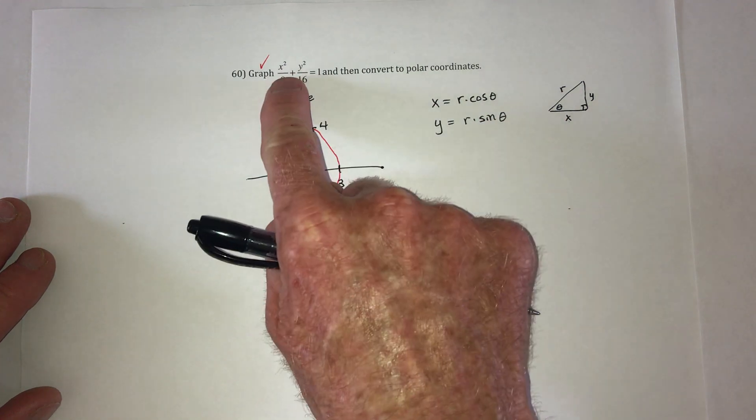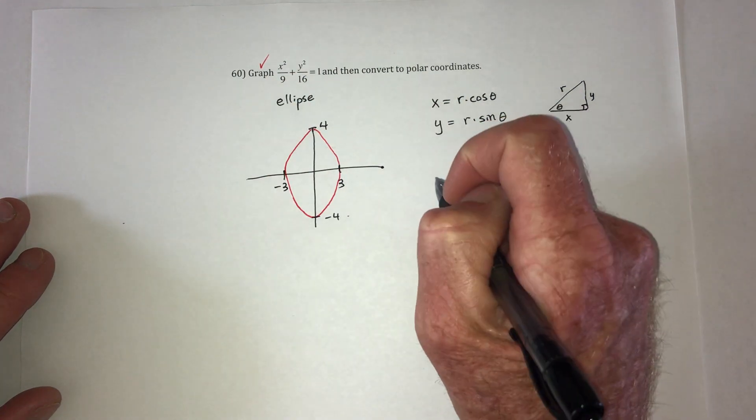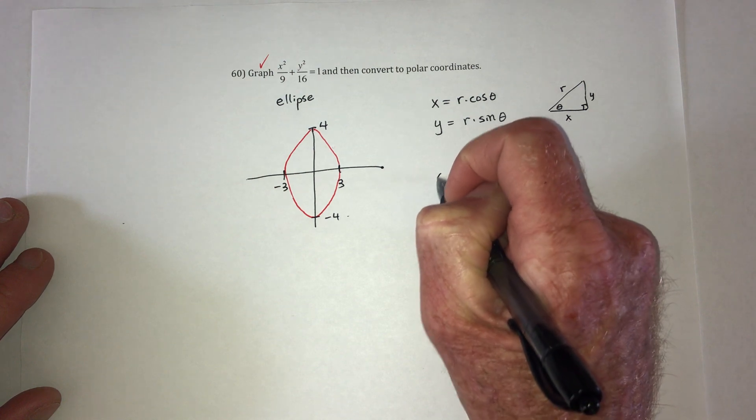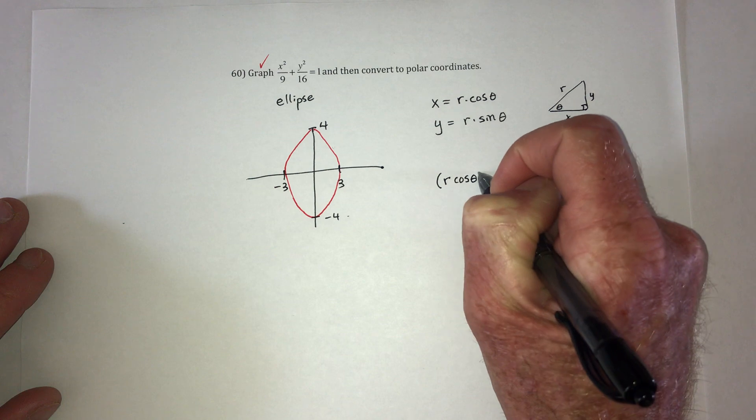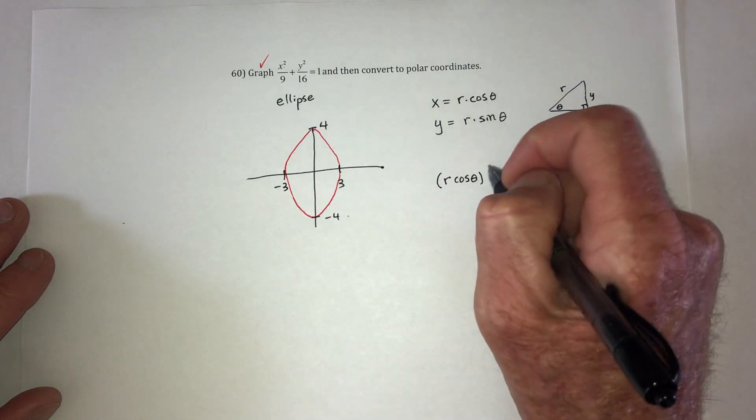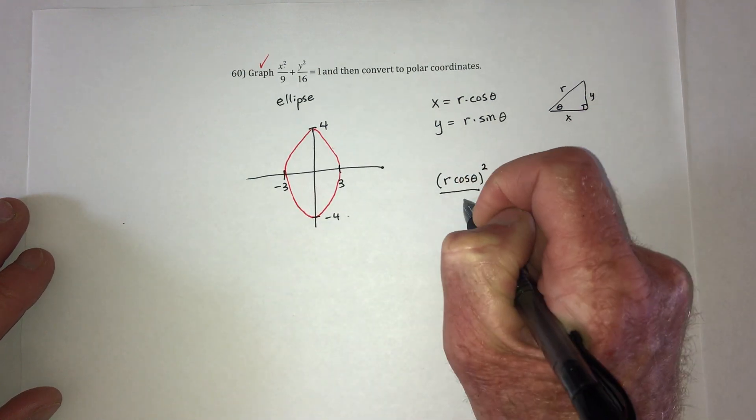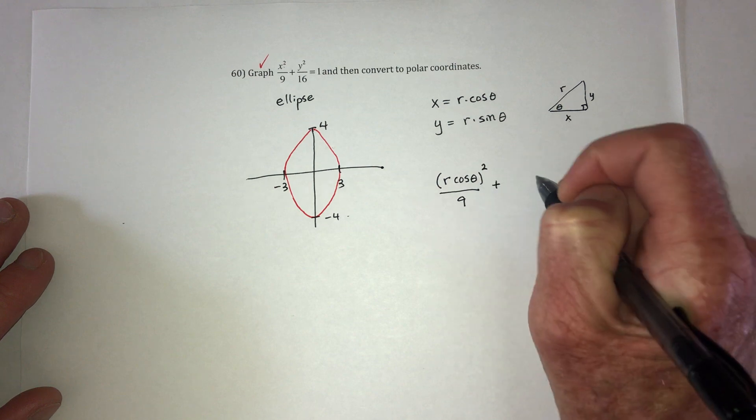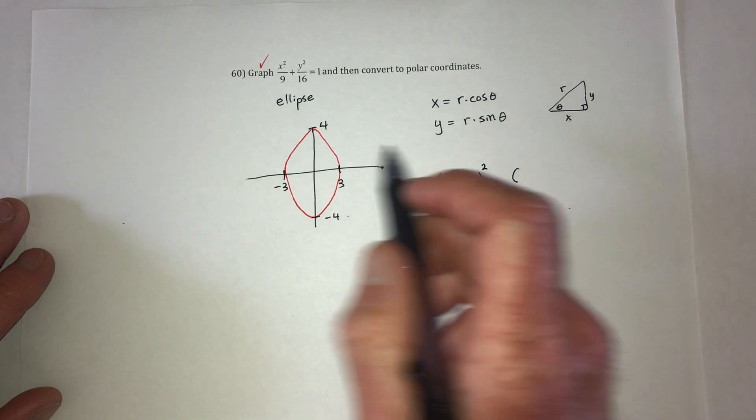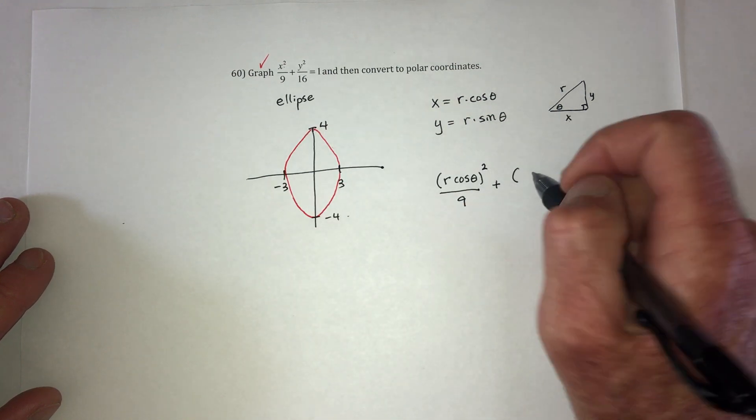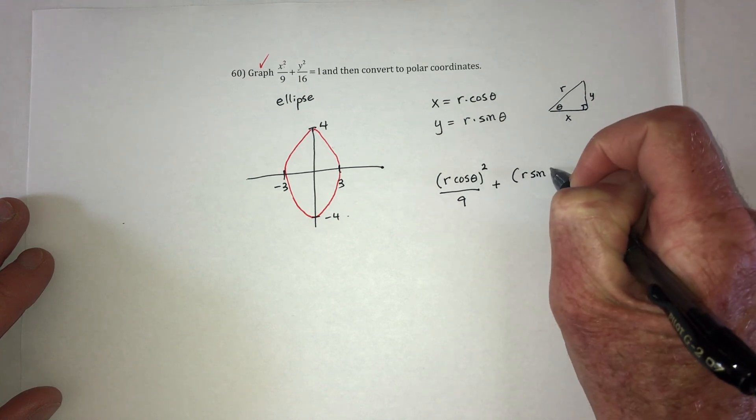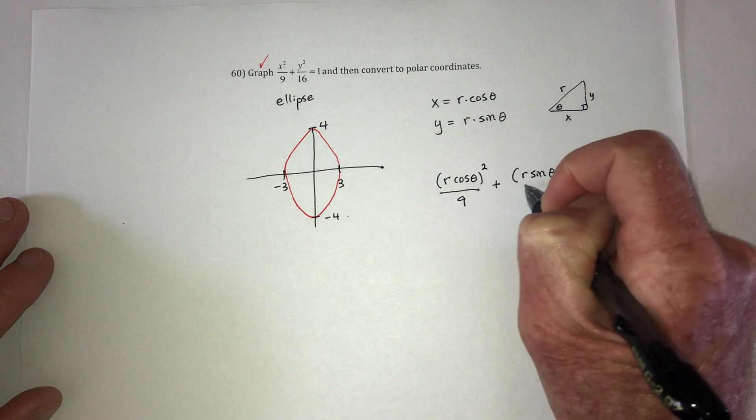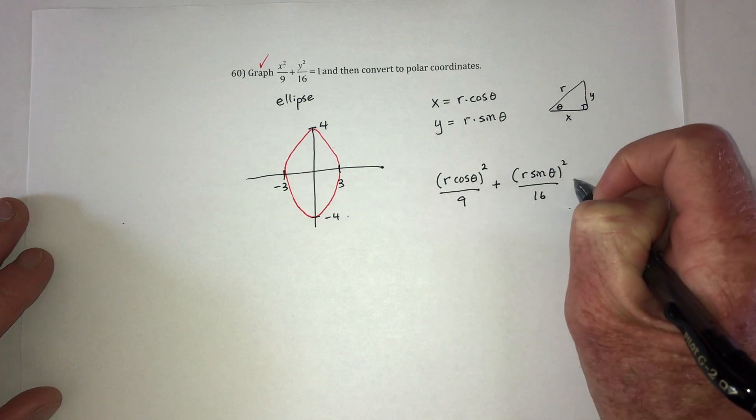Now I just need to take these two and plug them in there. So it says x squared. Replace that with r cosine of theta, and then it gets squared. And then replace the y with r sine theta, and then it's over 16.